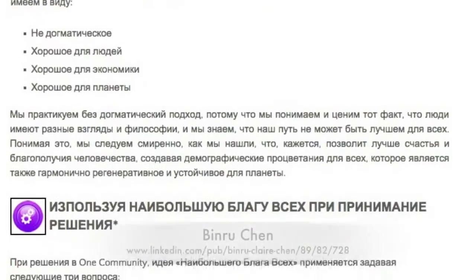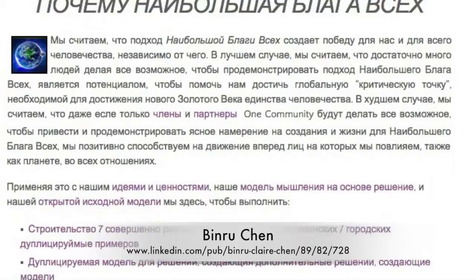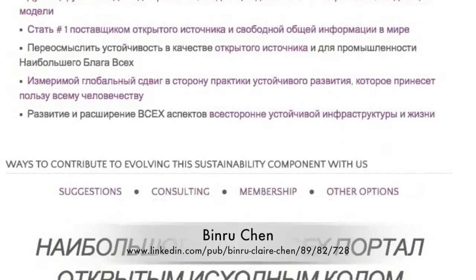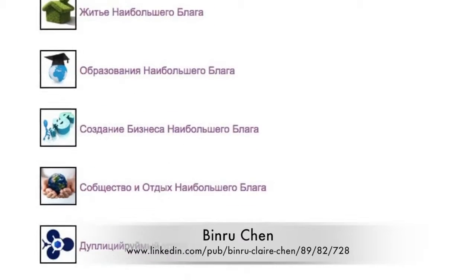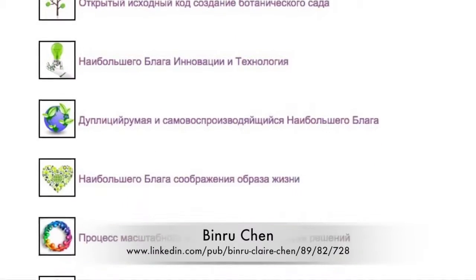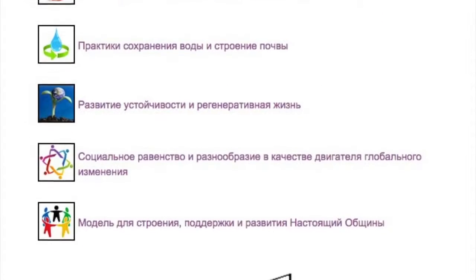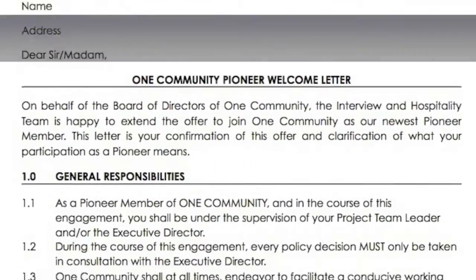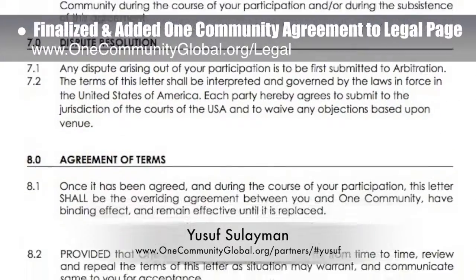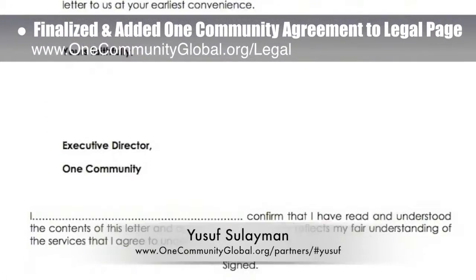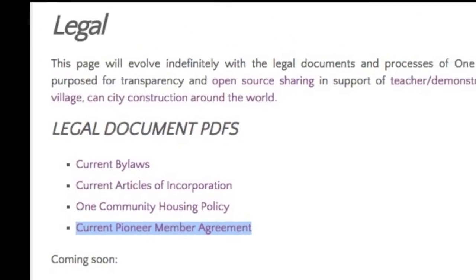Behind the scenes, Binru Chen, accountant specializing in audit and financial reporting, helped us create open source for-profit and nonprofit income statements that will soon be part of the Tax Considerations and Strategy page. This work is part of the Highest Good Economics component of building teacher demonstration hubs around the world, and is now about 40 percent complete behind the scenes and 20 percent complete on the site. We also finalized and added the community member agreement to the One Community Legal page — the work of Yusuf Suleiman, a lawyer and member of the Nigerian Bar Association, added as an open source template for others wishing to form similar agreements with their incoming members.